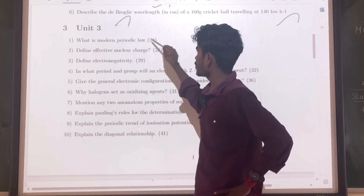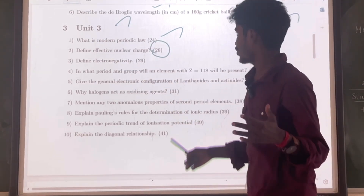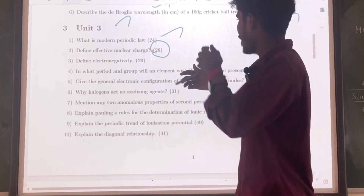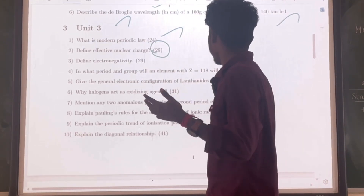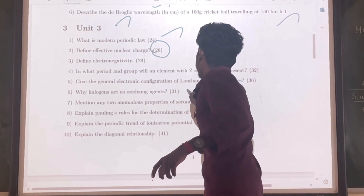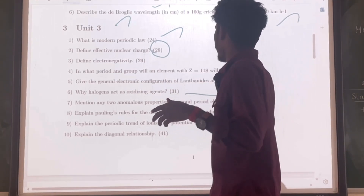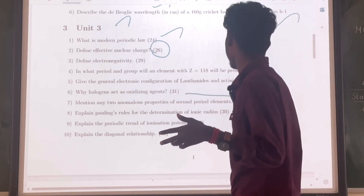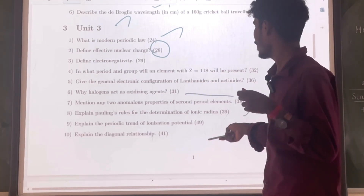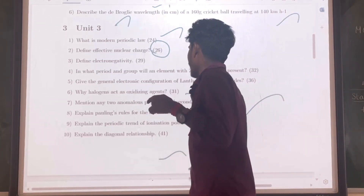Unit 3. Question number 3: What is the modern periodic law? Question number 24. Question number 26: Effective nuclear charge — question number 29. Electronegativity — very very important. Question number 32. Question number 36: In what period and group will an element with Z equal to 118 be present? Question number 31: Give the general electronic configuration of lanthanides and actinides. Question number 38: Why do halogens act as oxidizing agents? Question number 39 / 49: Explain the periodic trend for ionization potential. Question number 41: Diagonal relationship — very very important. Also: mention any two analogous properties of second period elements, and the rule for determination of ionic radius.